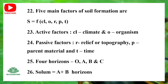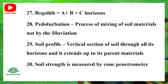A plus B horizons are called Solum. Regolith is A plus B plus C horizons. Pedoturbation is the process of mixing of soil materials not by illuviation. Soil profile is the vertical section of soil through all its horizons, extending up to its parent materials.